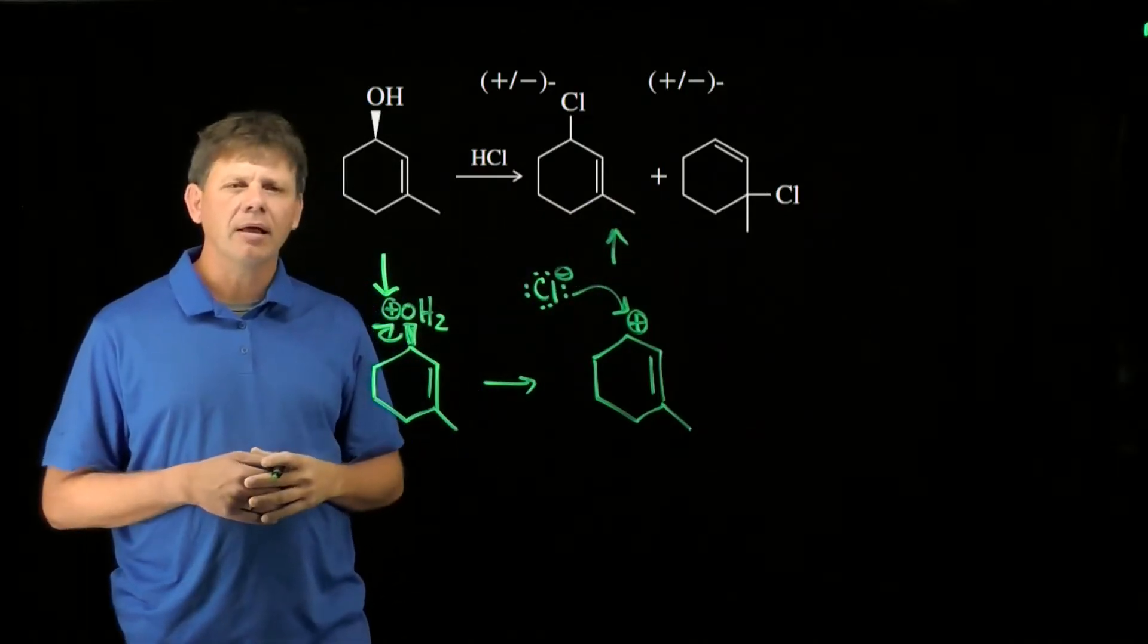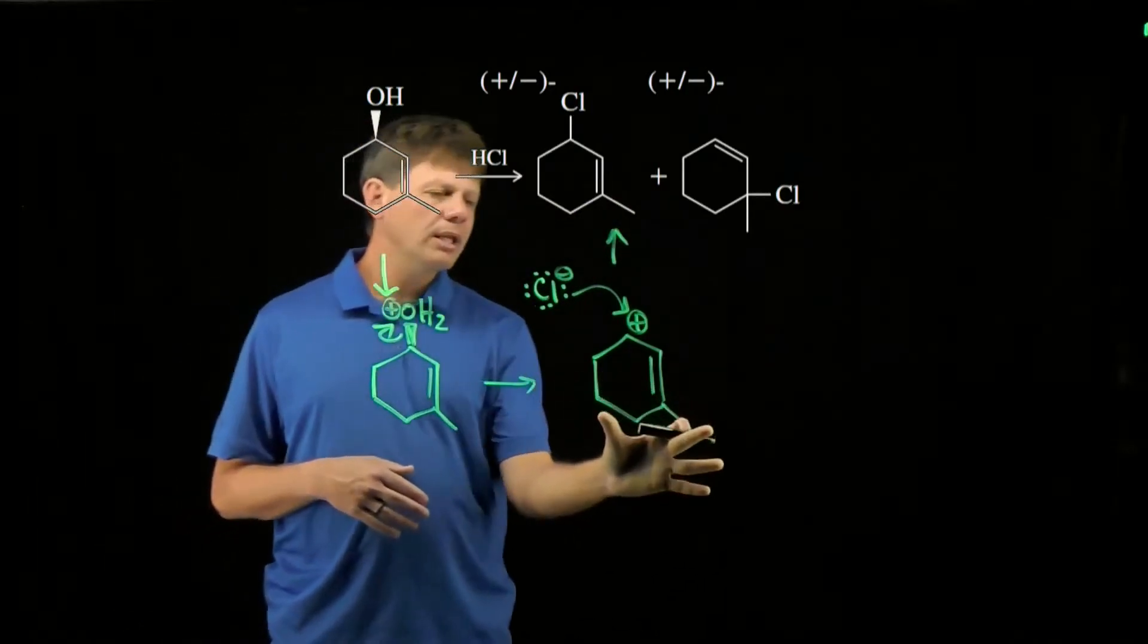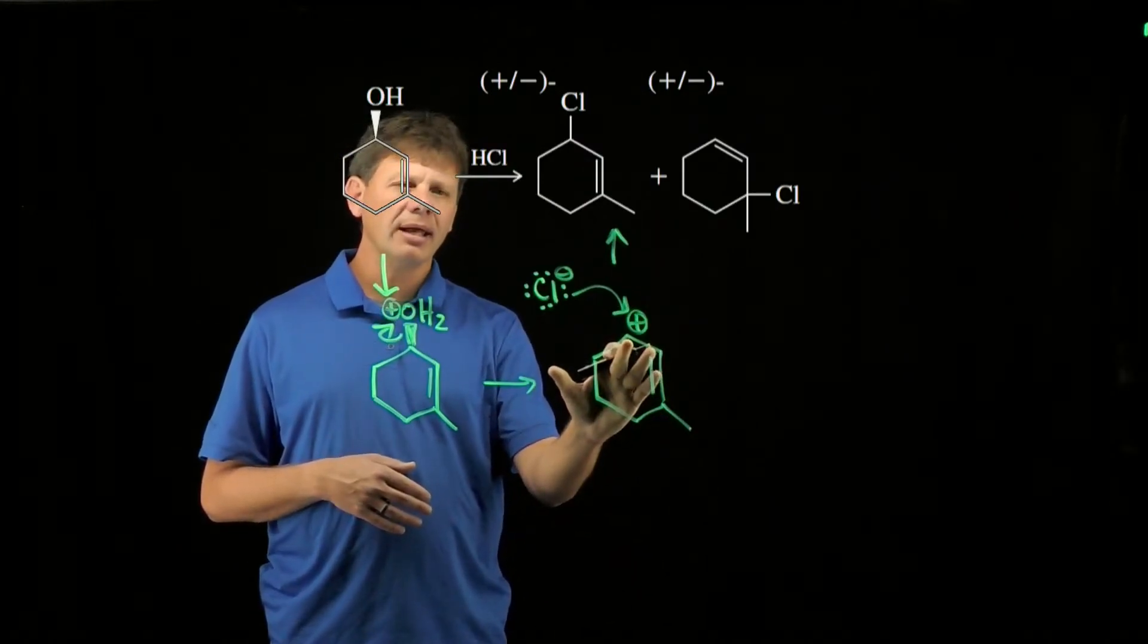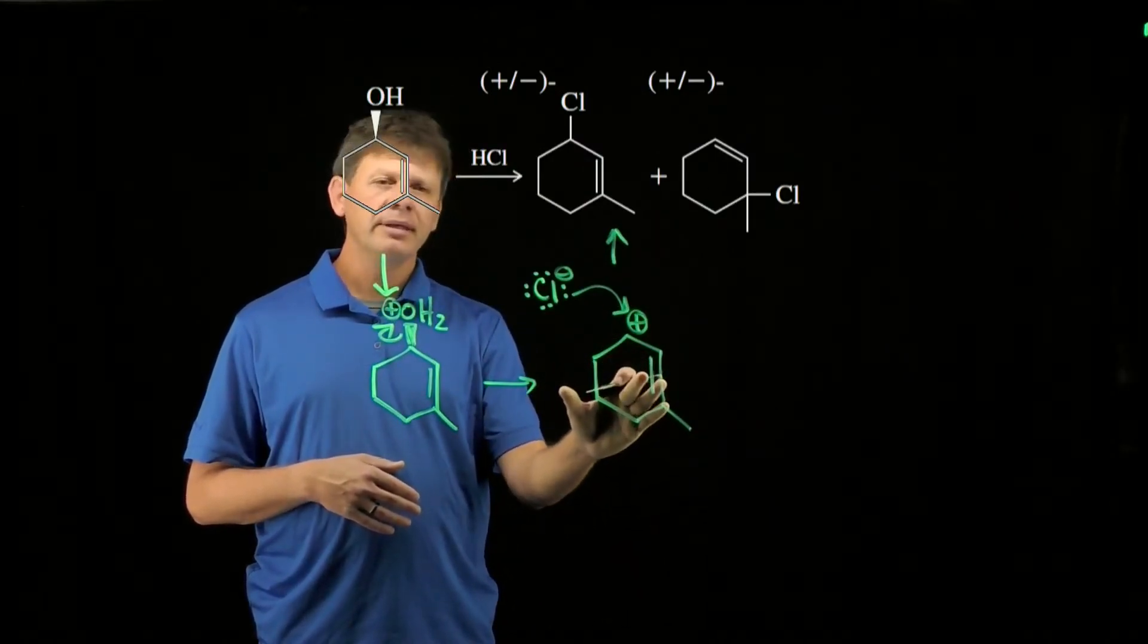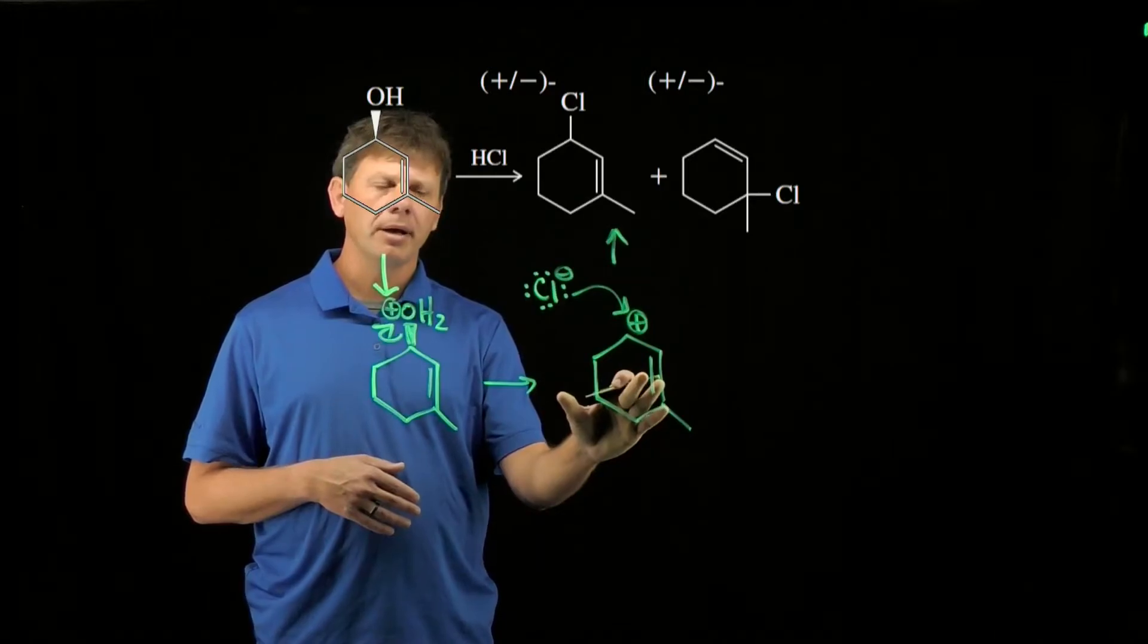But what about the other? To understand that, we need to recognize that in this molecule, we have a carbocation, an MDP orbital next door to a carbon-carbon pi bond.